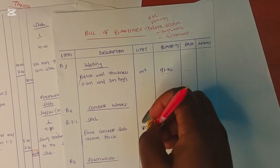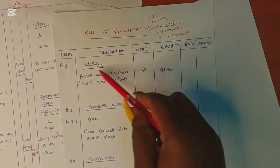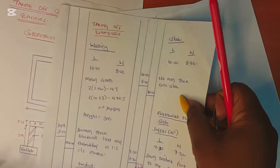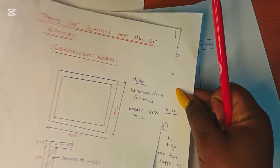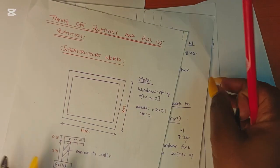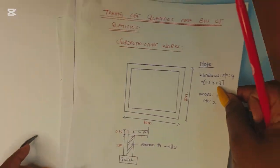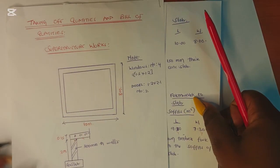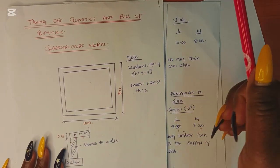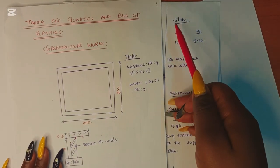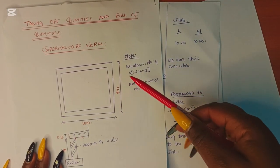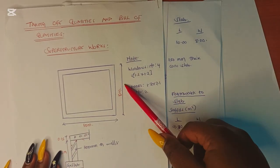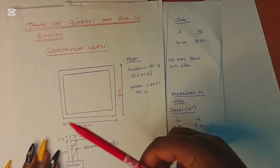We've been able to prepare the bill of quantity from this simple superstructure work. As we proceed we are going to go into more details and do various BoQs and taking offs. Make sure you subscribe if you haven't, like, comment, and don't forget to leave a comment. Until next time, bye bye.